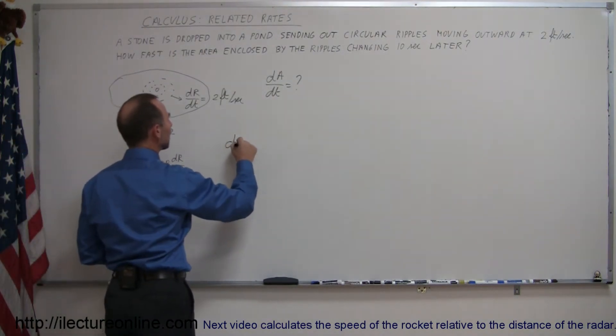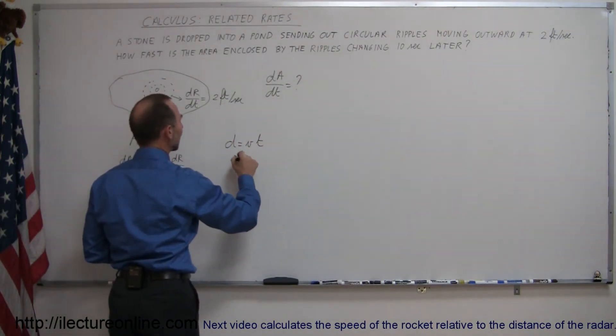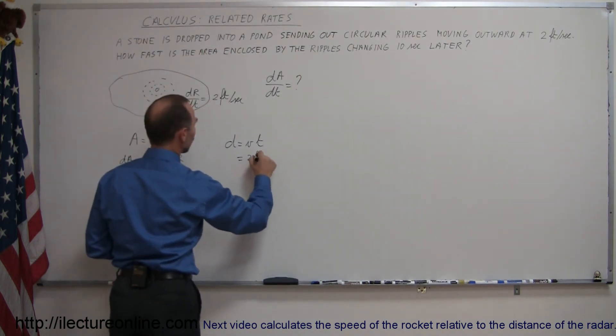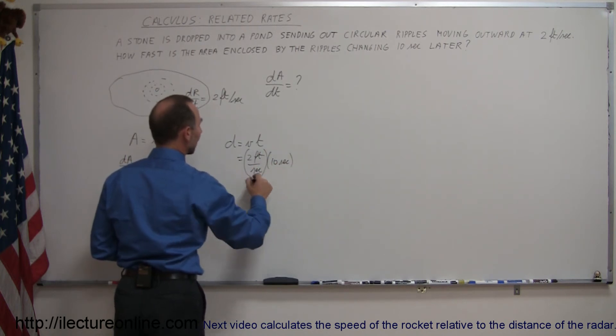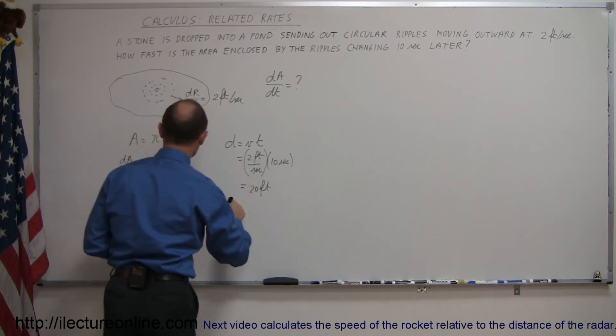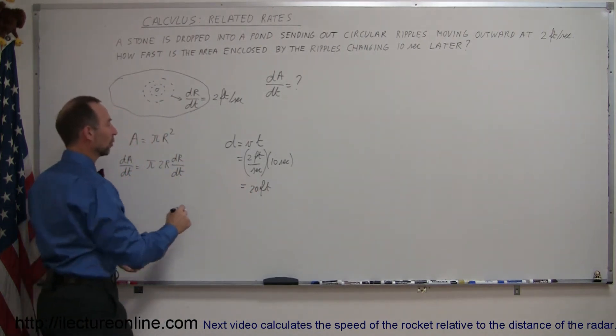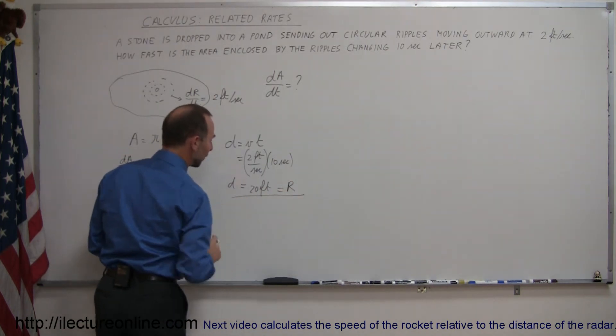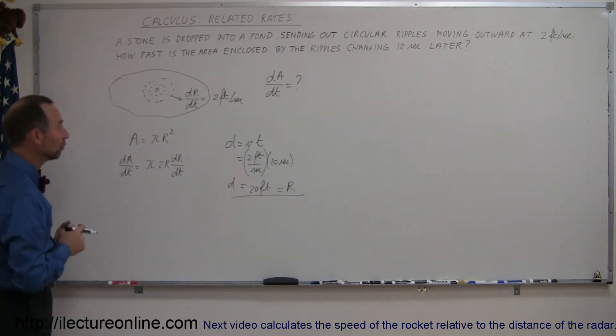Since distance equals velocity times time, and the velocity is 2 feet per second, and the time is 10 seconds, we can say that the distance after 10 seconds is 20 feet. That would be the r in our equation. So the distance, which is 20 feet, is the radius of the ripple because it goes out at 2 feet per second.